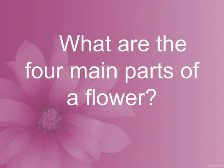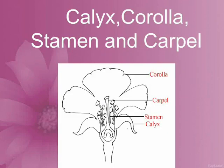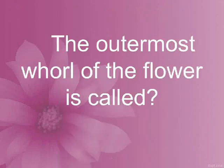What are the four main parts of a flower? Calyx, corolla, stamen, and carpel. The outermost whorl of the flower is called...